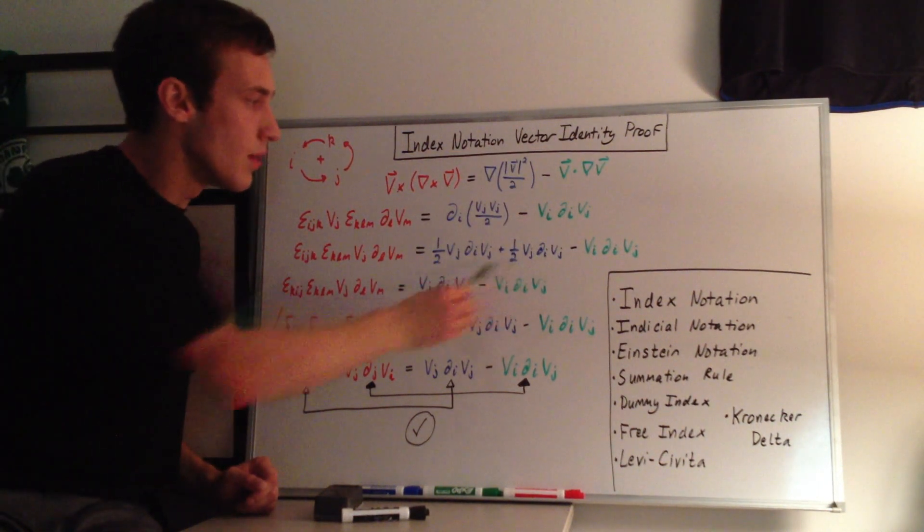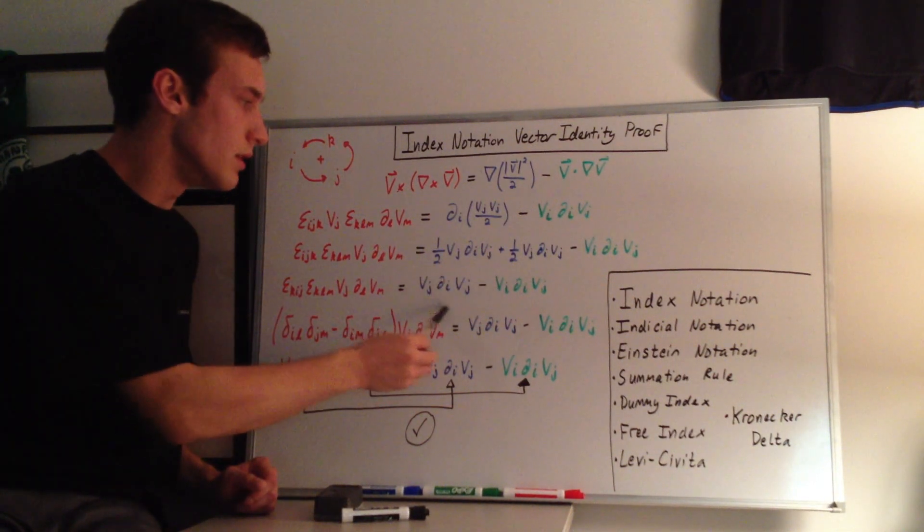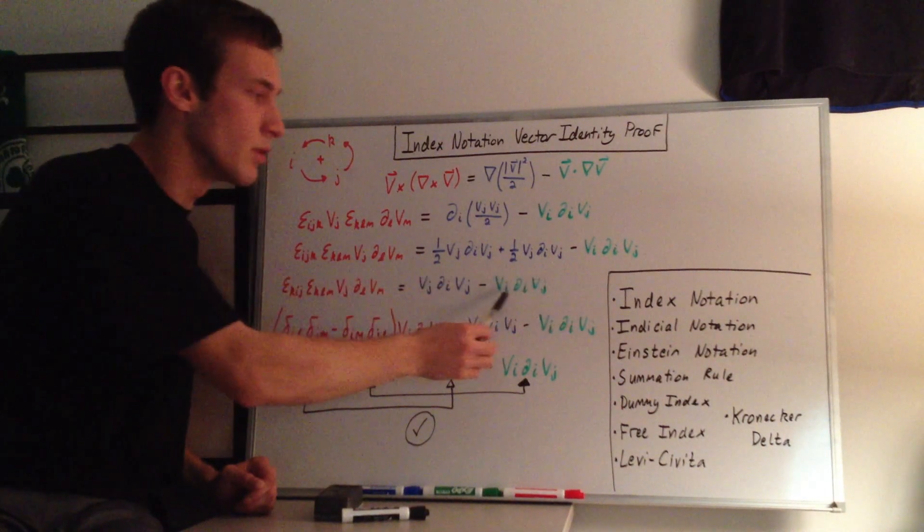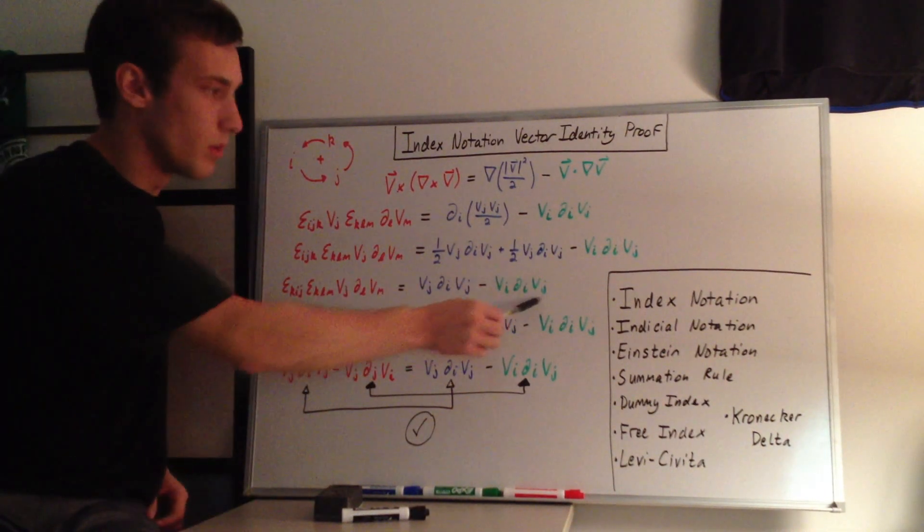And then here, since these two terms are the same, we just added them together, and the 1/2 plus 1/2 equals 1. So we have v_j, d_i, v_j, and then minus still this same term, v_i, d_i, v_j.